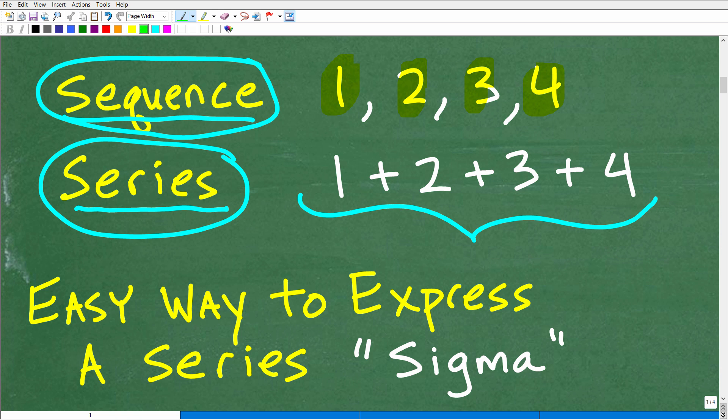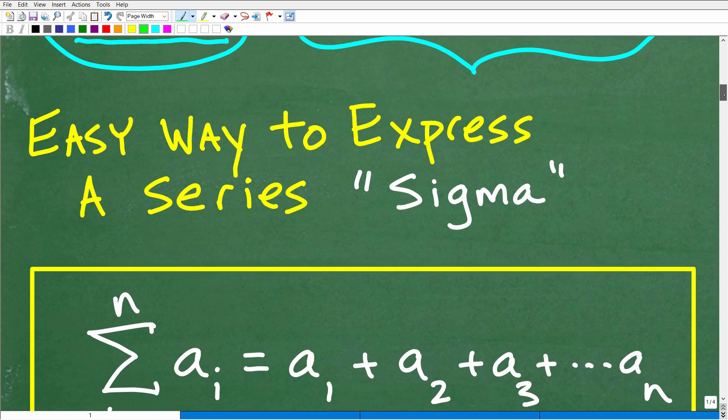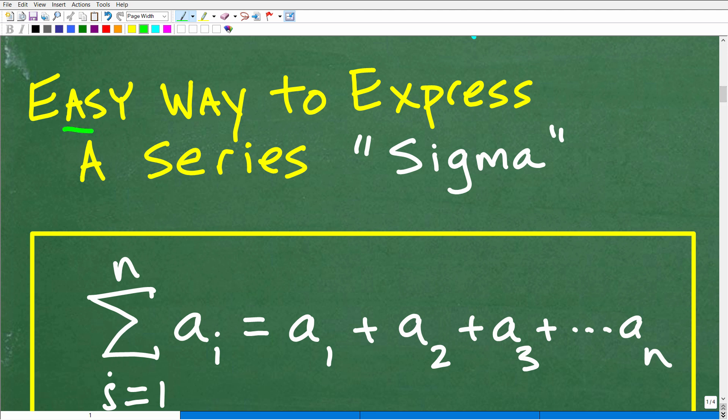All right. So the sequence is just numbers, a pattern of numbers separated by commas. OK, and these would be the terms of the respective sequence. But if we add up the terms of a sequence, we have now something called a series. OK, so you don't want to confuse these two terms. A lot of students do. It's totally normal. I mean, both of these words start with S and they're very similar. Right. But again, a sequence is something like this. One, two, three, four. OK, these are the terms of that sequence. A series is when we're adding up the terms of a sequence that is a series.